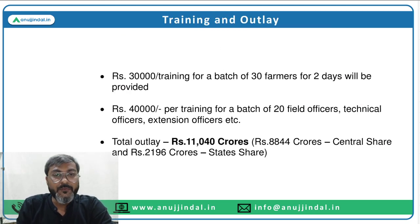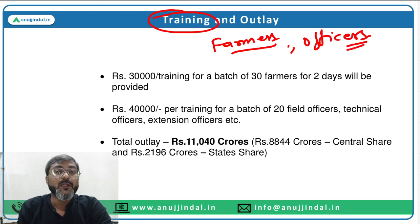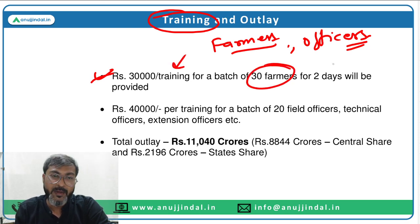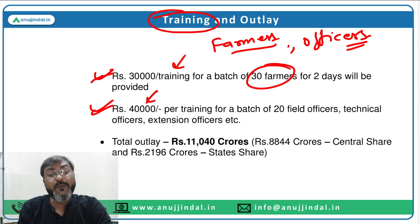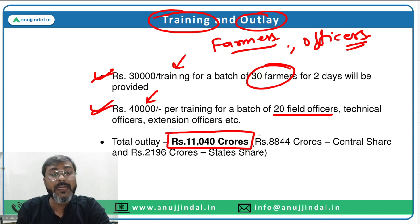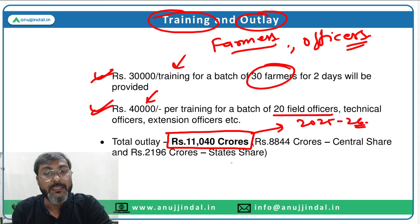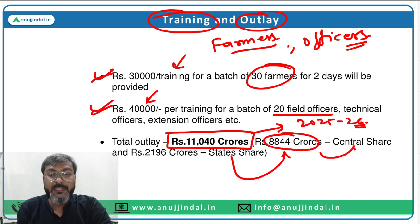There is also a provision of training for farmers and officers involved in implementation of the scheme. For farmers: Rs. 30,000 per training for a batch of 30 farmers for two days. For officers: Rs. 40,000 per training for a batch of 20 field officers, technical officers, extension officers, etc. The total outlay of the scheme is Rs. 11,040 crores up to financial year 2026, of which Rs. 8,844 crores is the central share and Rs. 2,196 crores is the state share.